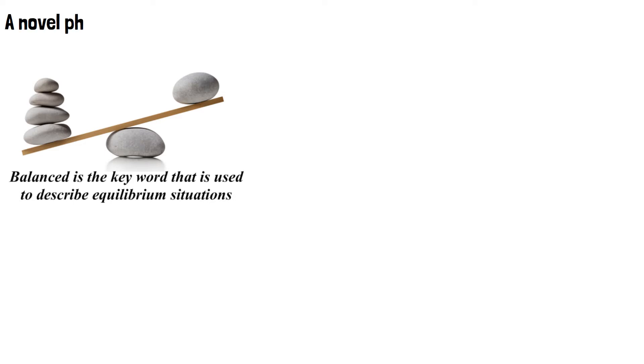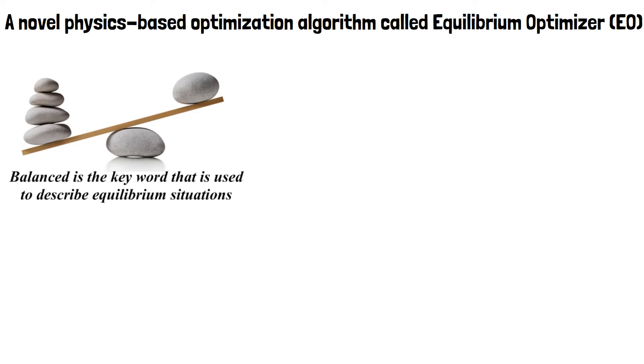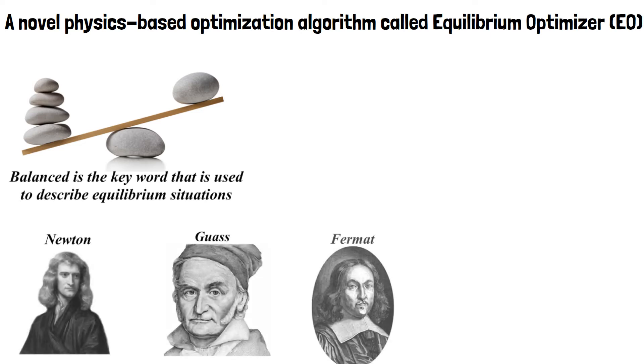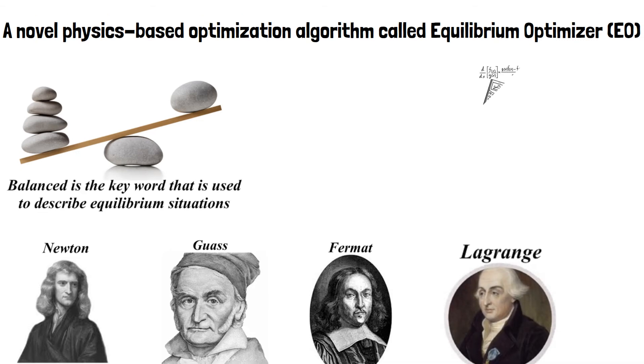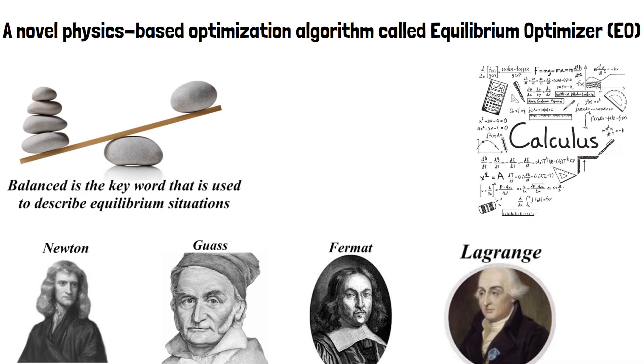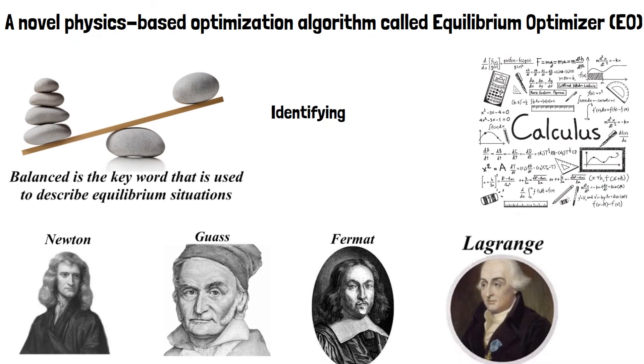Hence we develop a novel physics-based optimization algorithm called Equilibrium Optimizer, EO. Newton, Gauss, Fermat and Lagrange are known to be the early great scientists who have proposed and founded calculus-based formulas for identifying the best solution that is essential for the decision-making process.